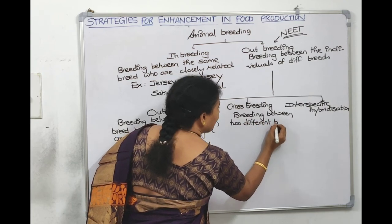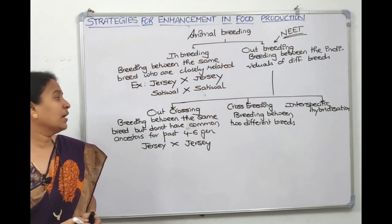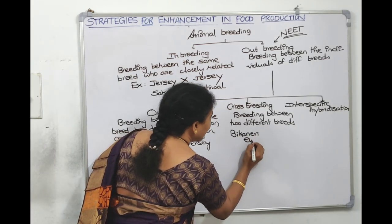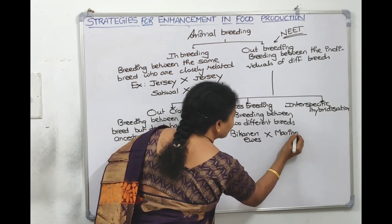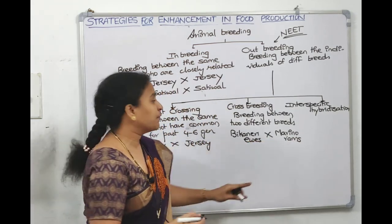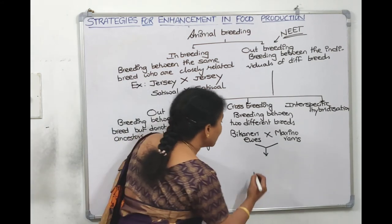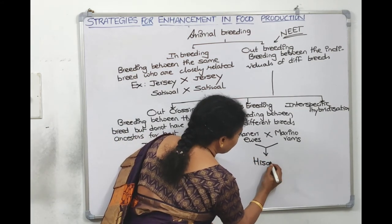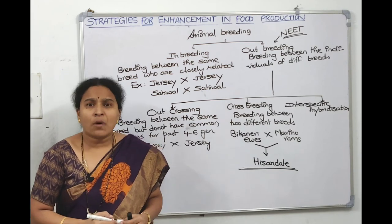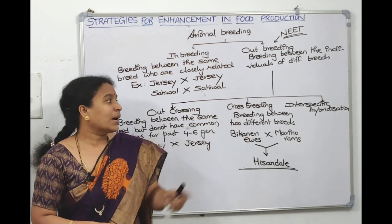An example of crossbreeding given in NCERT is Bikaneri ewes crossed with Merino rams — two different sheep breeds — which produced a new breed called Hissardale. So crossbreeding between two different breeds can give a new superior breed.